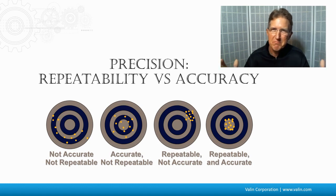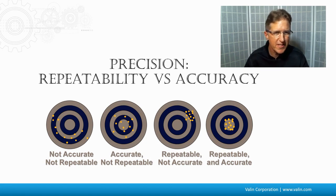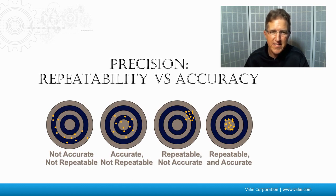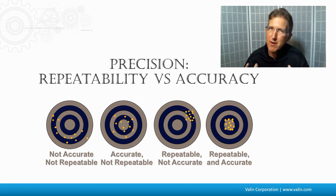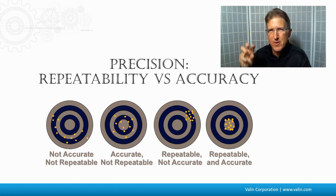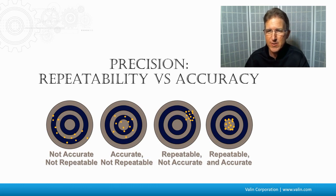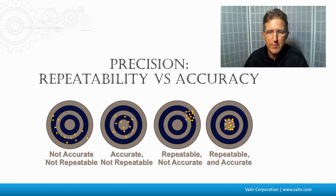The classic dartboard is commonly used in discussing repeatability versus accuracy. The first dartboard shows results that are not accurate and not repeatable. The second shows accurate results because they're centered around the bullseye, but not repeatable because we're not consistently hitting the bullseye. The third is repeatable because they're all clumped together in the corner, but not accurate. The fourth is both repeatable and accurate because we're hitting the bullseye repeatably.